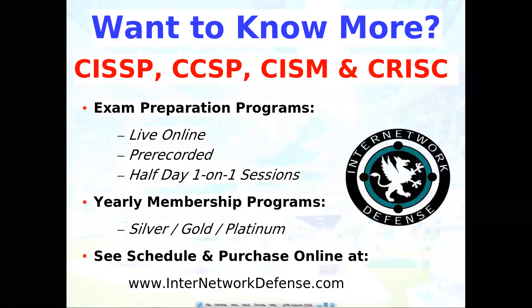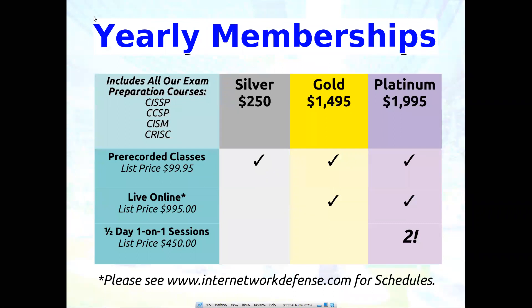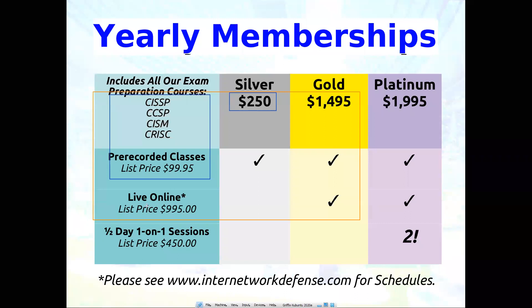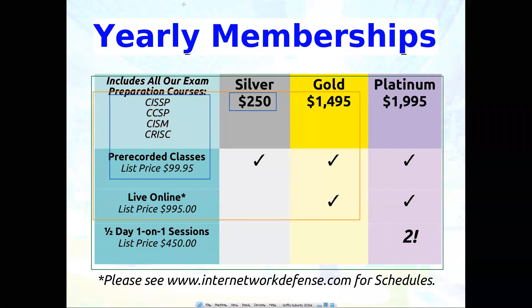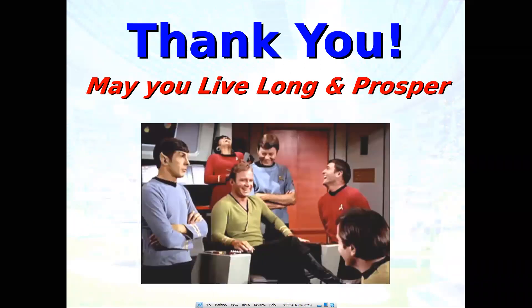That's it. I hope that helps people. If you want to know more, I do exam preparations — I've been doing this for almost 30 years, CISSP and the CCSP, CISM. I do live online classes, pre-recorded classes, and half-day one-on-one sessions. This year I have a yearly membership program: for $250 the silver tier gets you access to all four of my pre-recorded classes. If you do the gold for $14.95 a month, you get that plus access to any live online class valued at $4,000. And if you do the platinum, you have access to all that plus two half-day one-on-one sessions. Thank you — may you all live long and prosper.